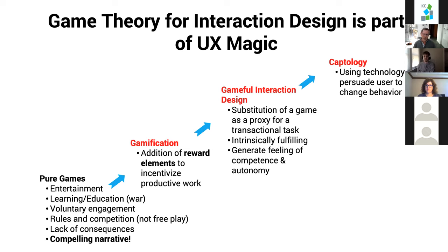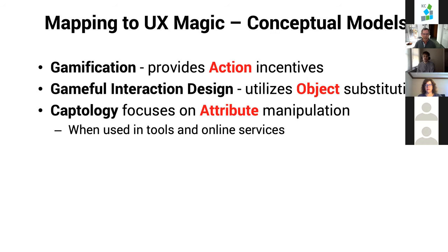And then captology, which stands for computers as persuasive technology — the invention of BJ Fogg at Stanford — is where you're trying to persuade users to change their behavior. In all three of these, we're trying to minimize cognitive load. That's not the same as pure games — in pure games, we're actually trying to increase cognitive load up to just below the maximum level that users can handle and still win. How does this map to conceptual models and grammar? It's actually pretty simple: gamification provides action incentives; the gameful design flavor does an object substitution; and captology is basically manipulating attribute values on the screen. So whenever you see 'only one left at this price,' that is captology — and when there's only one left at that price, that's a lie, the warehouse is full of them.